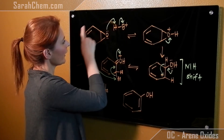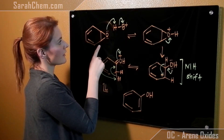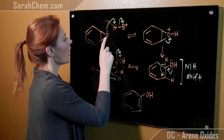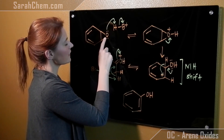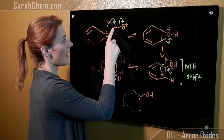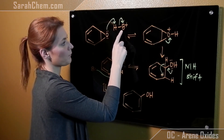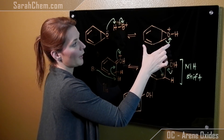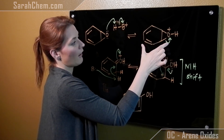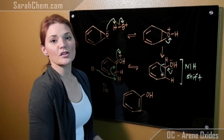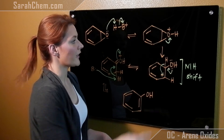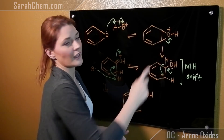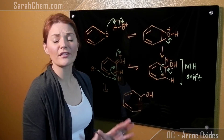So over here we have our arene oxide and some unspecified acid. The oxygen using its lone pairs will attack the hydrogen, breaking this bond. So over here we're going to form our protonated arene oxide. Now oxygen has a positive charge on it and it's in a three-membered ring, so oxygen is not very happy.